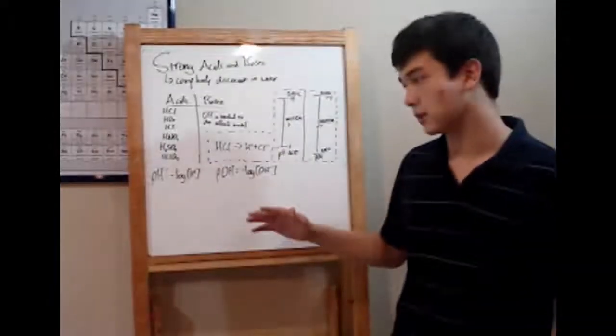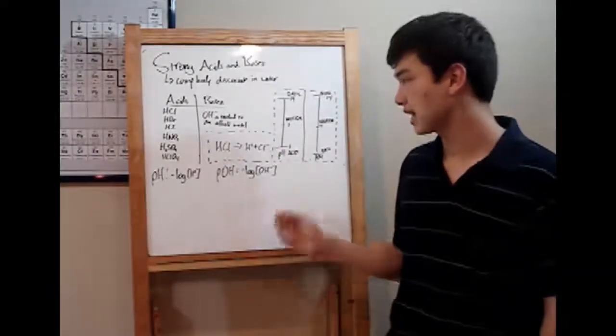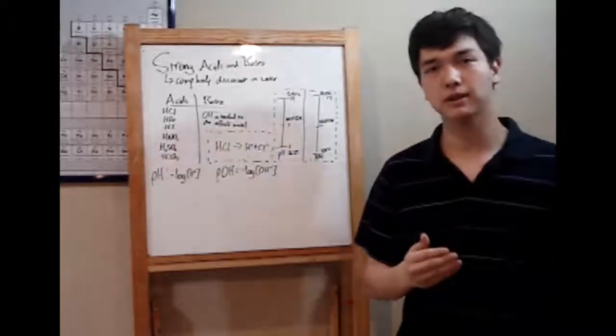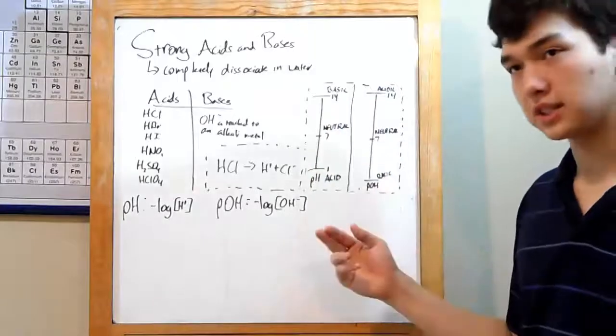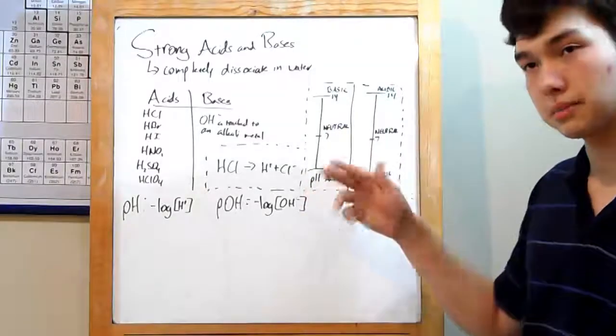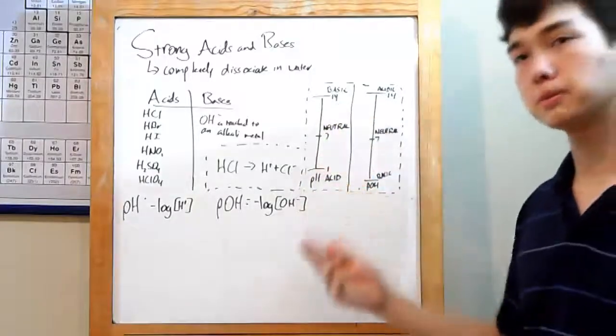Now, the next thing your chemistry teacher might want you to know are the pH and pOH scales. You're probably already familiar with the pH scale. Simple thing, 1 to 14. 1 is your most acidic substance, 7 is completely neutral, and 14 is your most basic substance.